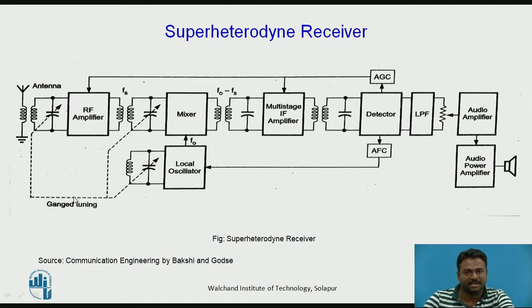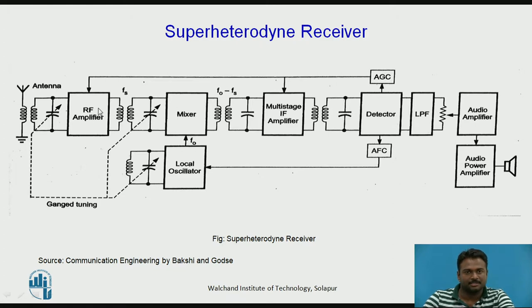In the super heterodyne receiver, the RF amplifier stage, mixer stage, and local oscillator stages are connected mechanically to a common knob known as a gang tuning knob. The antenna receives all radio frequency signals available in the atmosphere and feeds them to the RF amplifier. Using the gang tuning knob, we select the desired frequency, which is amplified by the RF amplifier while all other frequencies are rejected. The RF amplifier provides initial gain to the desired signal and feeds it to the mixer.